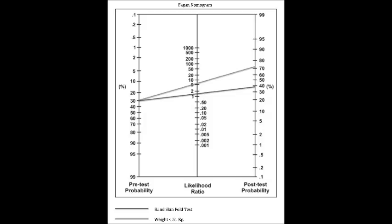Let's say the patient completes the hand-skin fold test first and they test positive. The physician would then chart the positive likelihood ratio for that test onto the Fagan nomogram. Looking at the chart at the bottom of the handout, the positive likelihood ratio for the hand-skin fold test is 1.2. The physician places a mark at 30% on the pre-test probability line and another mark on the middle line at 1.2, representing the likelihood ratio.